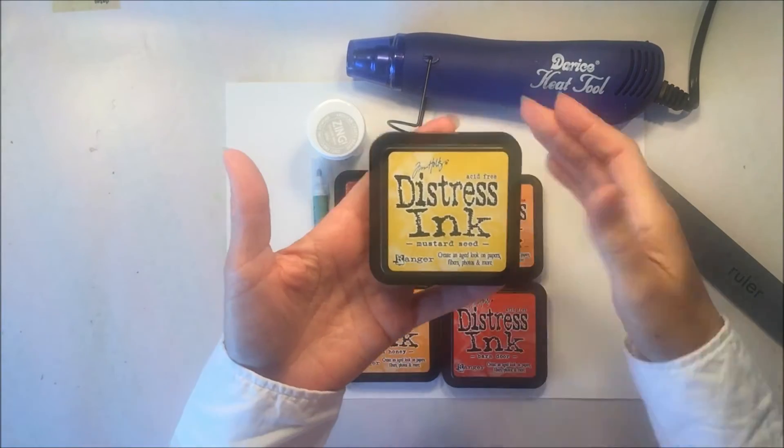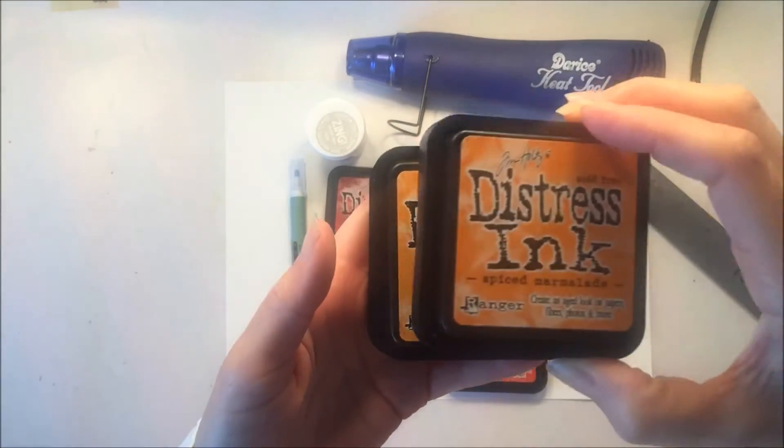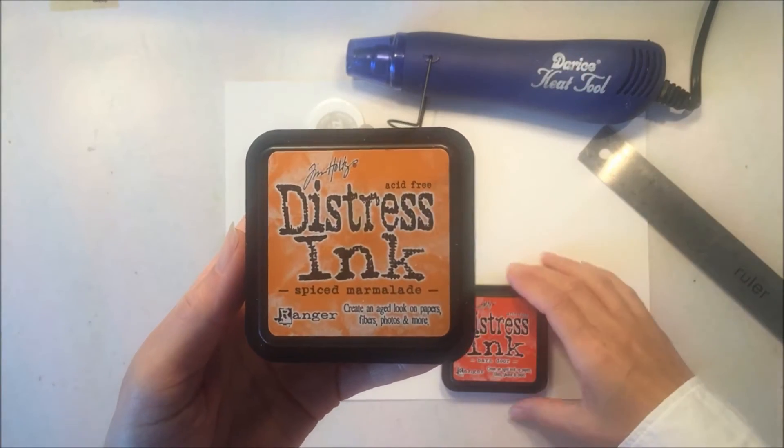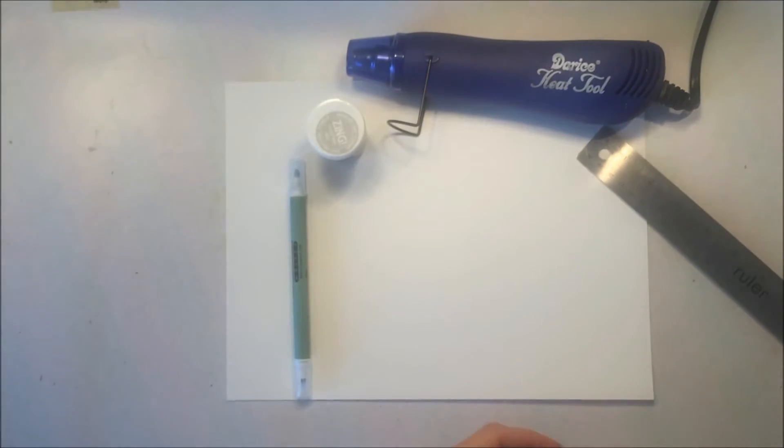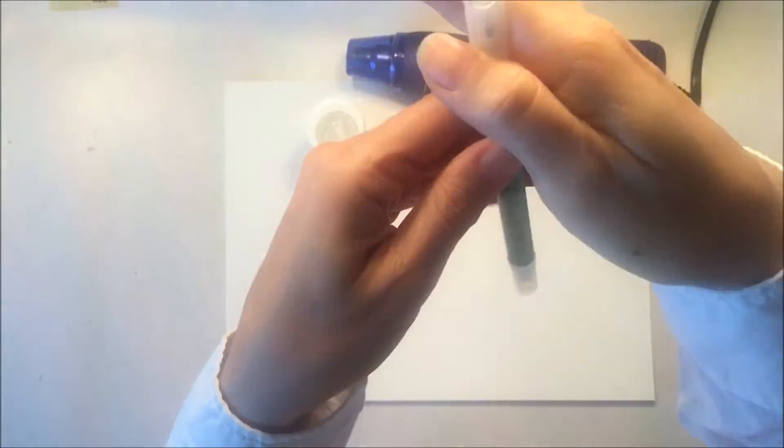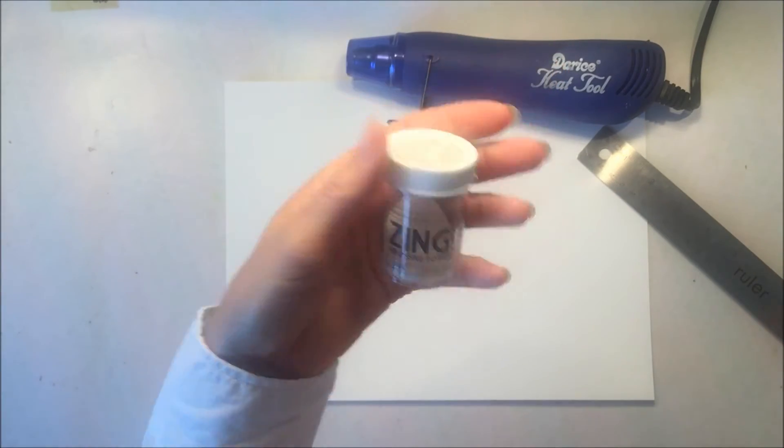We're using distress ink pads in these beautiful fall colors of yellow, orange, and red. You could use any watercolors you'd like or even some watercolor pencils for this project, but we're also going to be using an embossing pen and embossing powder in order to create these triangle lines.